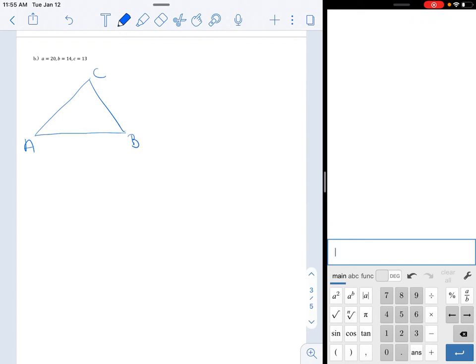Okay, so across from big B is 14, across from big C is 13, and across from big A is 20. All right, it is solely up to you what you want to solve for first. Just because of the alphabet, I'm going to solve for angle A first.